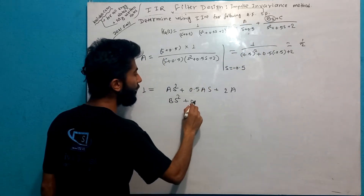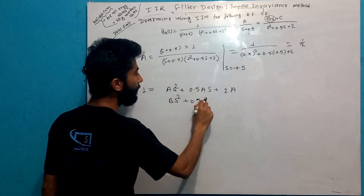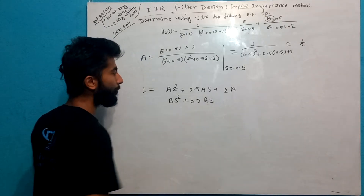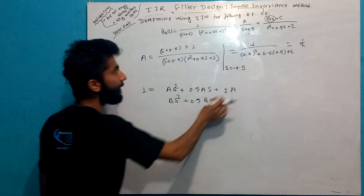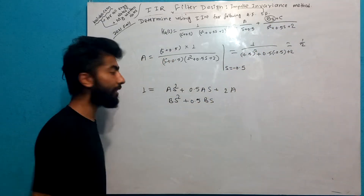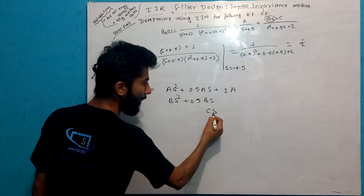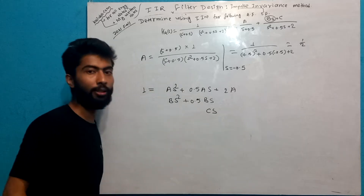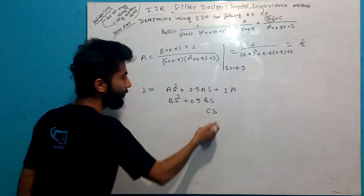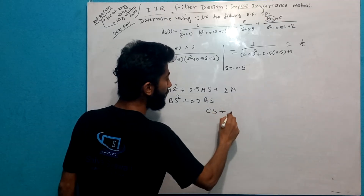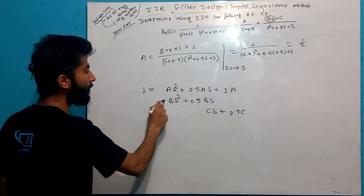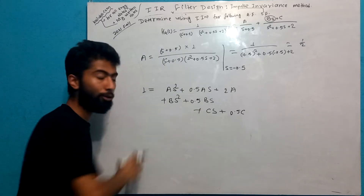B times S will give 0.5, so it will be 0.5 BS. Now we will multiply the constant term. C gives plus 0.5C. We multiply the constant term as Spider-C.